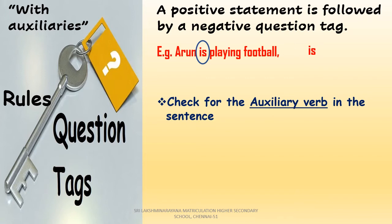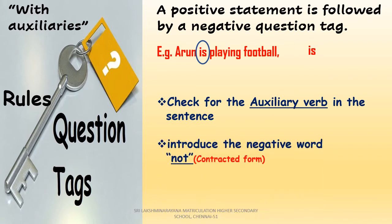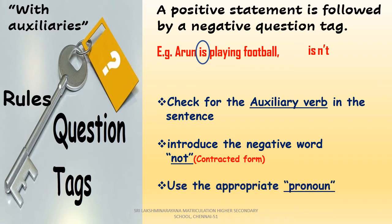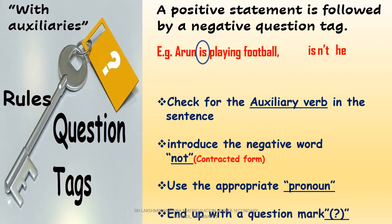Since the given statement is positive, we write the contracted form of 'not,' that is 'n't.' After this, we write the appropriate pronoun. To find the pronoun, look at the subject. If the subject denotes a masculine gender, use 'he'; if feminine, use 'she.' Here, the subject is Arun, which denotes masculine gender, so we use 'he.' Finally, end the question tag with a question mark.